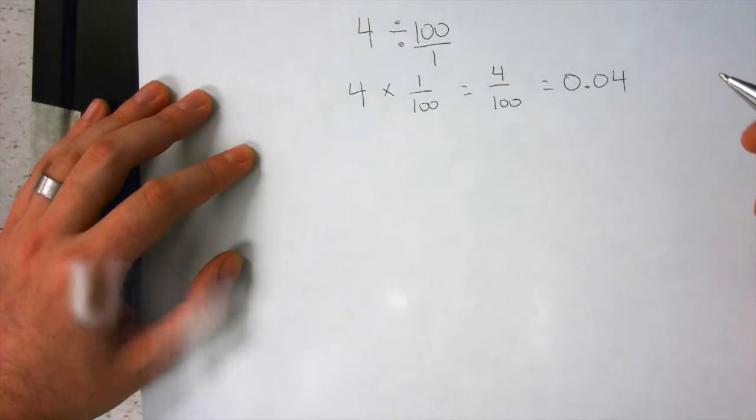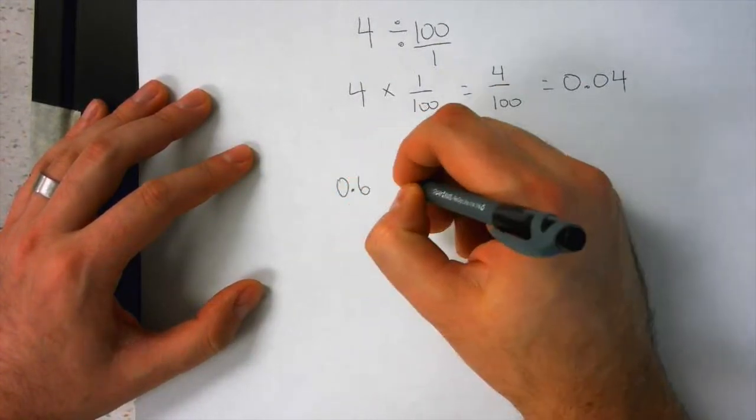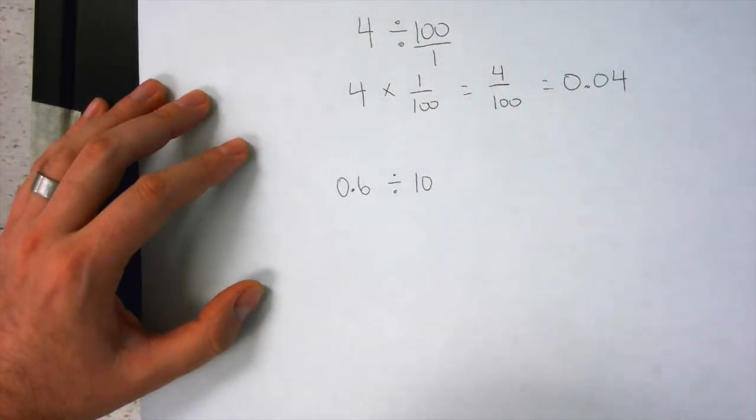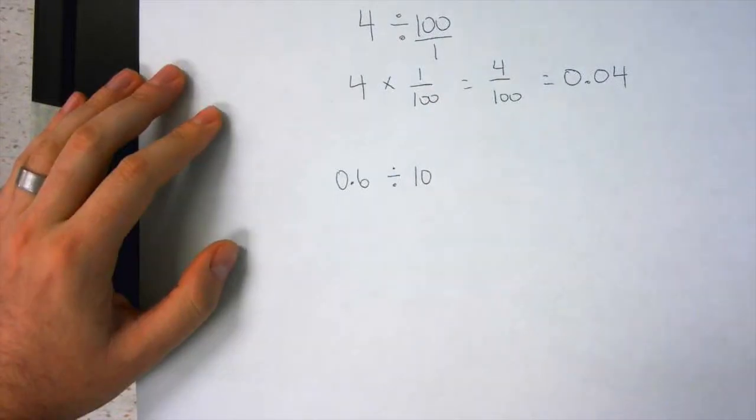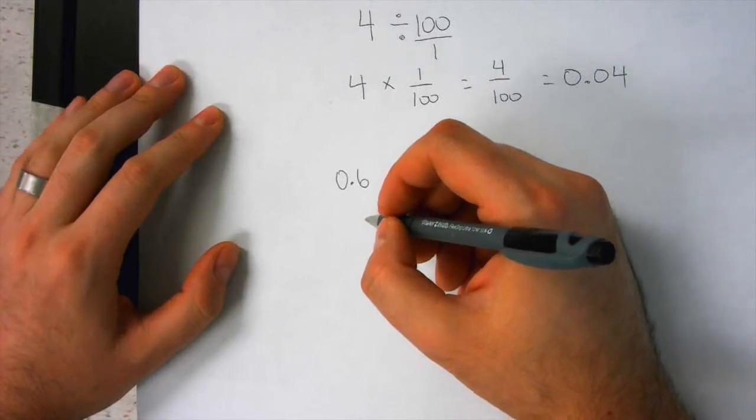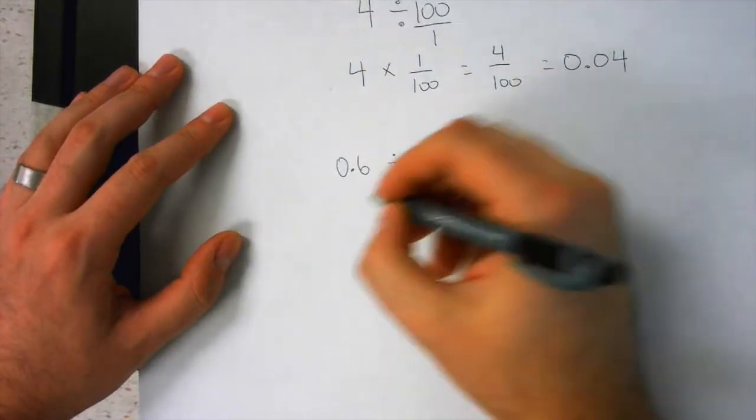If we took the number, say, 0.6 divided by 10, this one's tricky now, what would we do? See hands go like this. Marry him in the back.